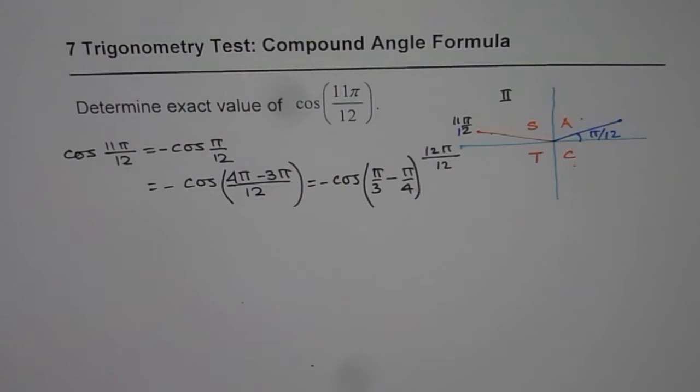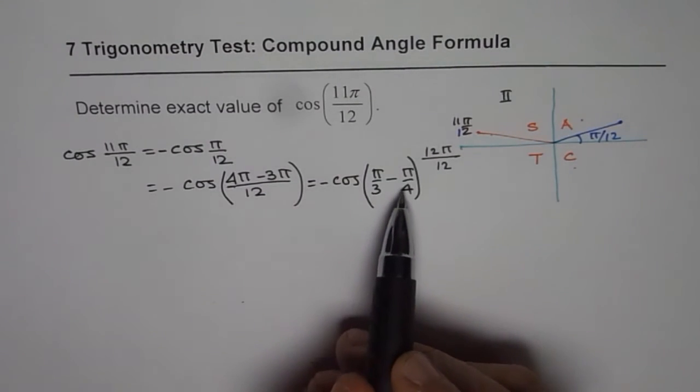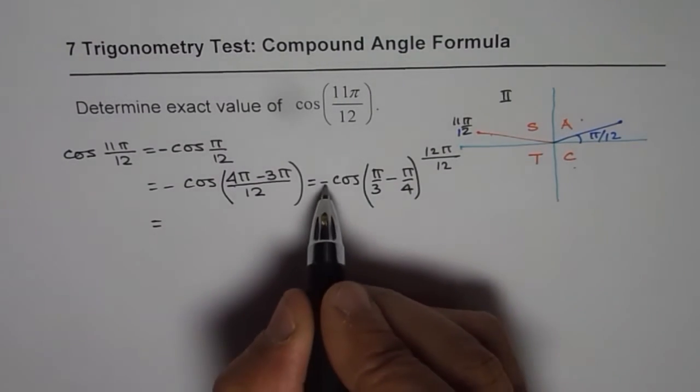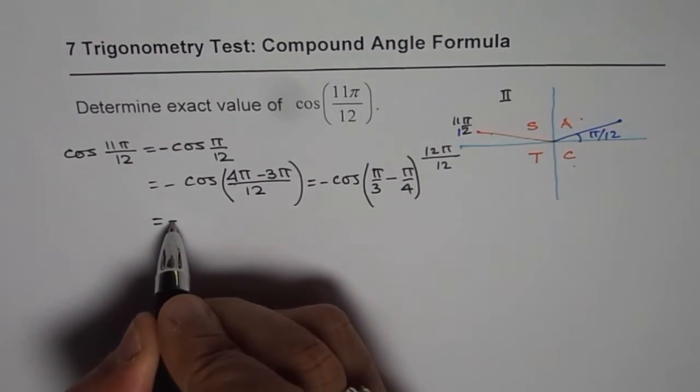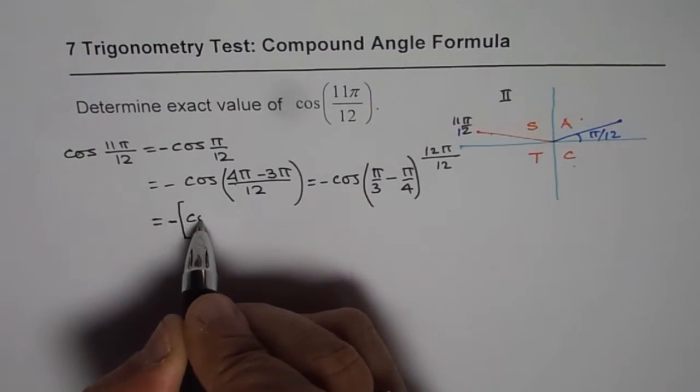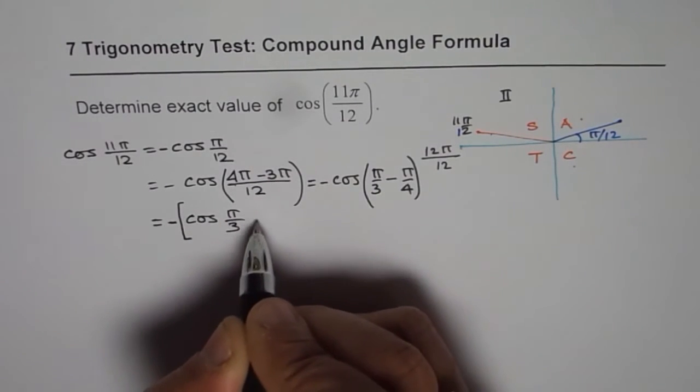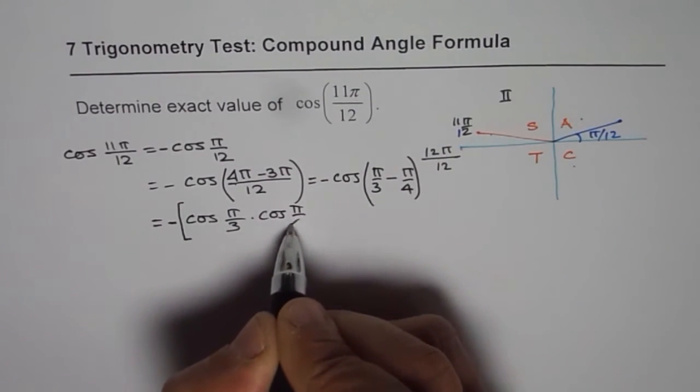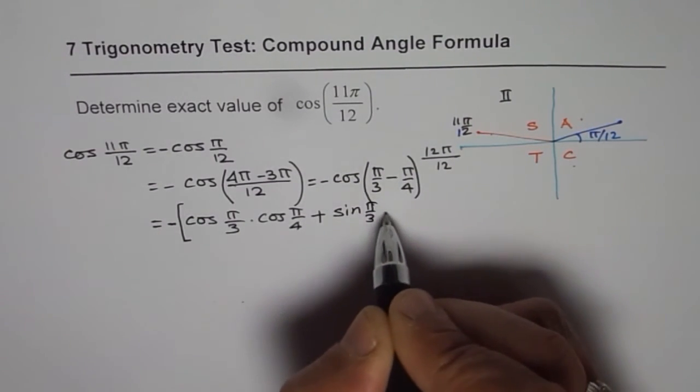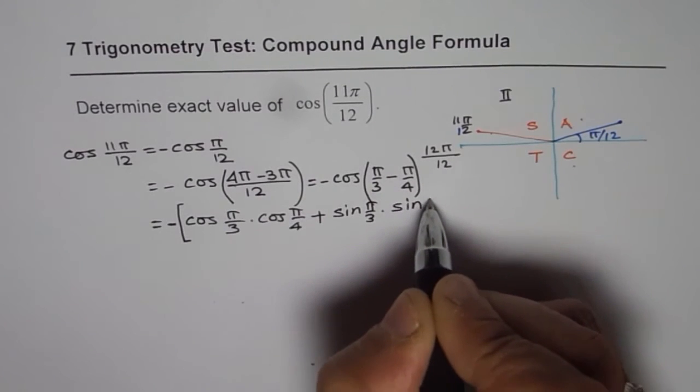Once you get to this stage you can apply the compound angle formula. Now you know compound angle formula for cosine is cos A cos B plus sin A sin B. So we can now write this as, we have minus outside. So let me keep minus and make square brackets. And then we write cos of pi by 3 times cos of pi by 4 plus sin of pi by 3 times sin of pi by 4.